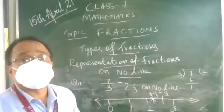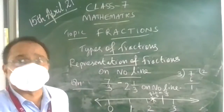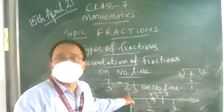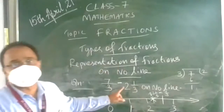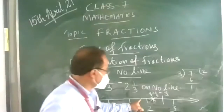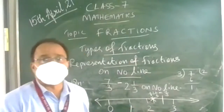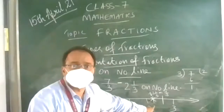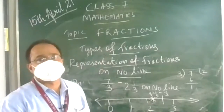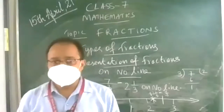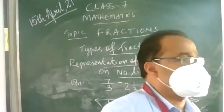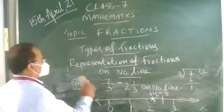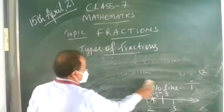This is how to represent improper fractions on the number line. Draw the number line, for example with 7 upon 3. Convert it to a mixed fraction, locate the segment between 2 and 3, divide that segment into 3 equal parts, and the first part after 2 — that is 2 and 1 upon 3 — equals 7 upon 3. Like this, every fraction can be expressed on the number line.